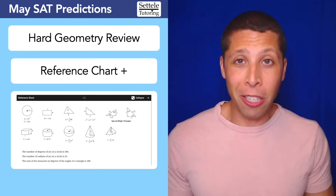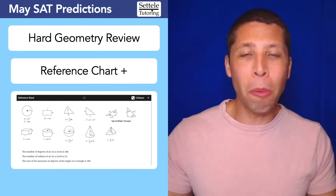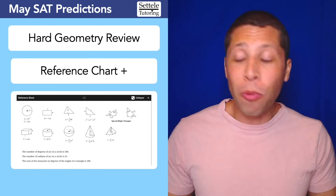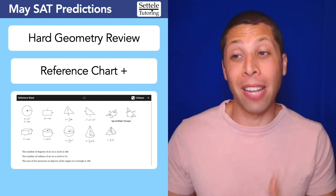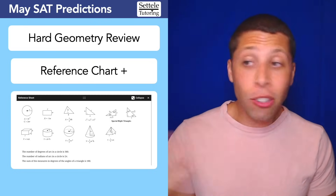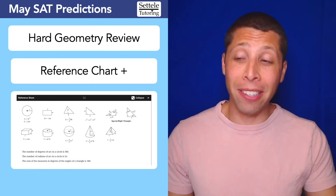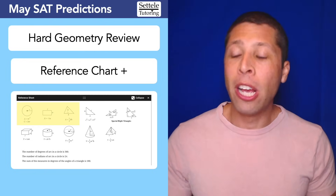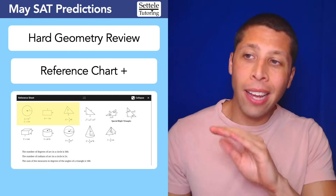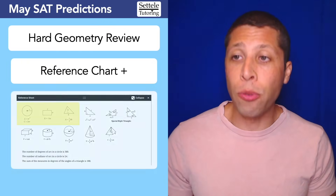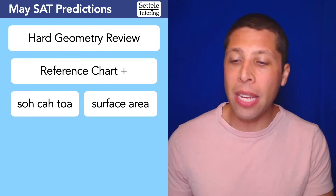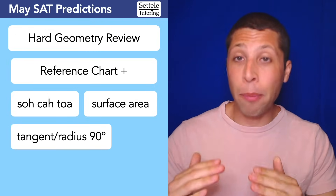The most important big-picture idea for geometry is to remember the reference chart. We are given a reference chart on every single math module — just click the button at the top of the screen and it shows you all the formulas. You don't need to memorize them. There's no reason you should ever get a question wrong because you forgot a formula, because it is there. Treat the reference chart like a menu of rules and ideas. Most of the craziness on geometry really just comes down to circles, rectangles, and triangles.